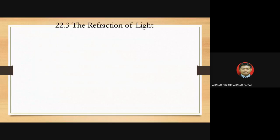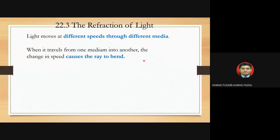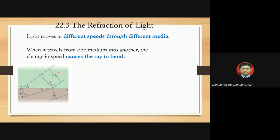The refraction of light: light moves at different speeds through different media. When light passes from one transparent medium to another, it is refracted because the speed of light is different in the two media. When you travel from one medium to another, there is a change in speed which causes the ray to bend. As shown in this diagram, the light indicated by the blue line travels from medium one, colored green, into medium two, colored gray.